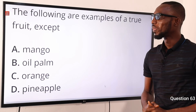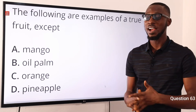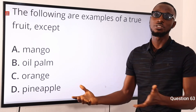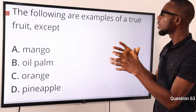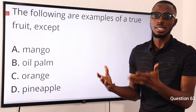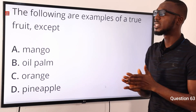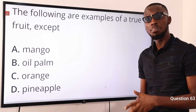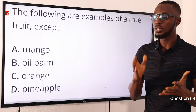Question 63: the following are examples of a true fruit except what? A true fruit is one developed from a fertilized ovary — a good example is mango. A false fruit is developed from the ovary and other floral parts; examples include figs, pineapple, apple, and breadfruit. Since pineapple is a false fruit, the correct option is option D for pineapple.